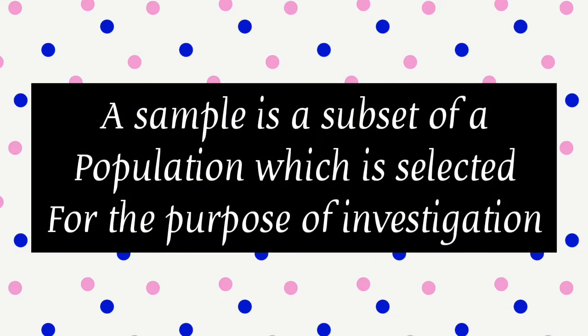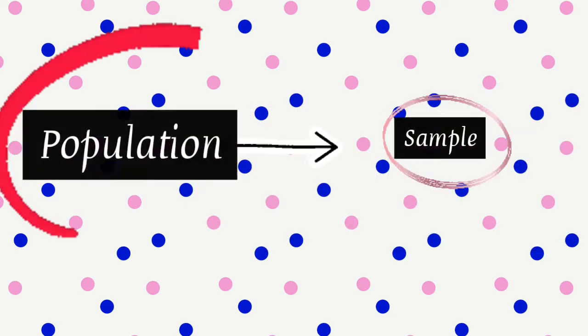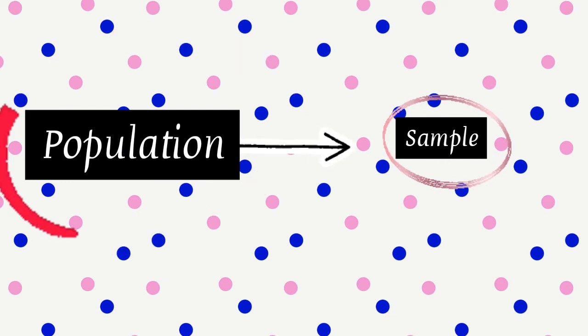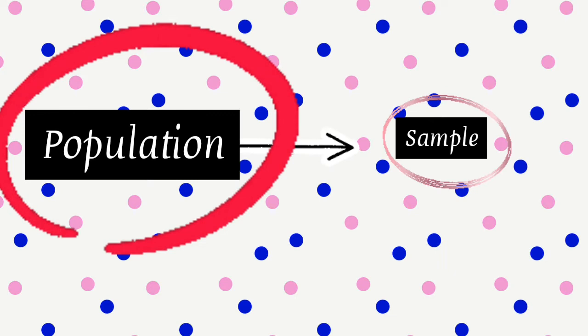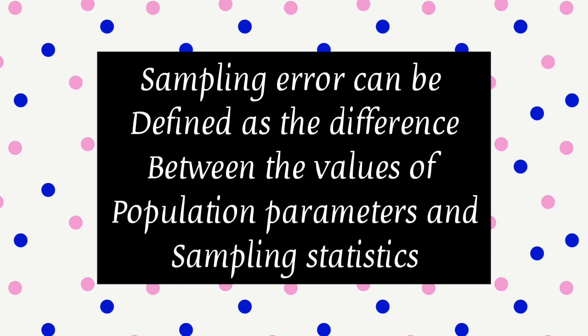Now there is always a difference between the results of the sample study and the actual population. For example, if in a population of 10,000 people we are to find the average height and our sample is that of 100 people only, then the average height of that sample of 100 people will always have a difference with the actual average height of the total entire population of 10,000.